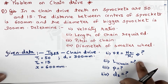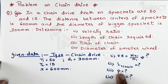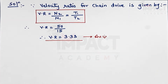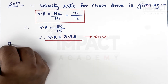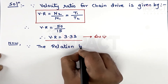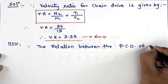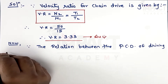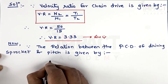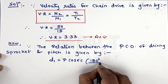After finding the velocity ratio, I'll calculate d2. To find d2 I first need the pitch. The pitch is calculated using d1 and t1. The relation between the pitch circle diameter of the driving sprocket and pitch is: d1 = p × cosec(180°/t1).